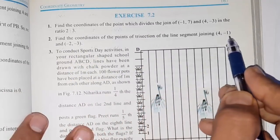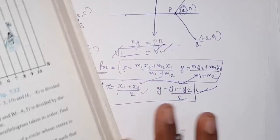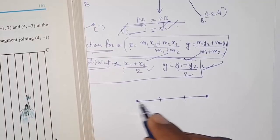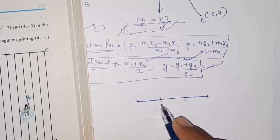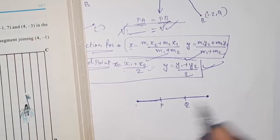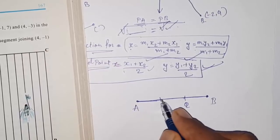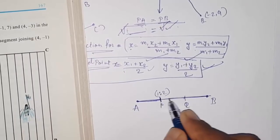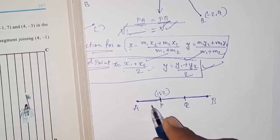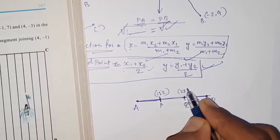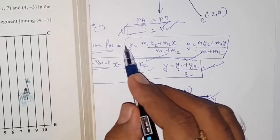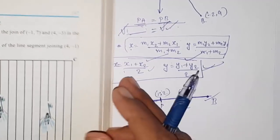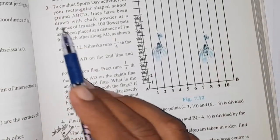For the trisection question — finding coordinates of the point of trisection of a line segment — trisection means dividing the line into three equal parts, giving two points P and Q between A and B. For point P, the ratio is 1:2 (one part on the left, two parts on the right). For point Q, the ratio is 2:1. Use the section formula separately for each to find both coordinates.